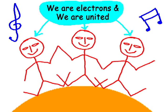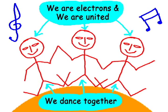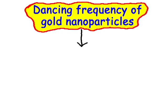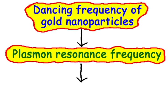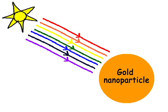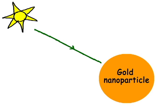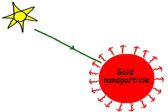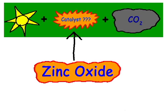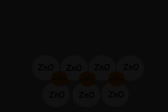Surface electrons of the gold nanoparticles dance together at one frequency. We can call that dancing frequency the surface plasmon resonance frequency of gold nanoparticles. The dancing frequency of our nano heaters is the same as the frequency of green light. Therefore, our nano heaters can absorb only green light. Our catalyst is zinc oxide with nano heaters.